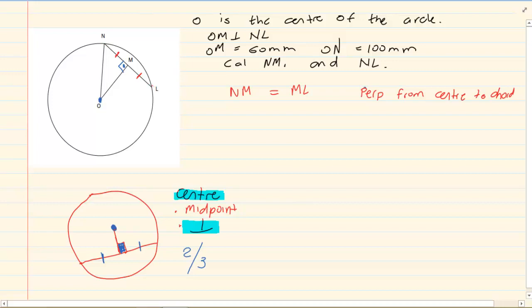Now what else do we have? They told us that OM is 60 and they told us that ON is 100. They want us to calculate NM and then they want us to calculate NL. Now this question is usually known for its Pythagoras. If you look, we have a lovely Pythagoras here: a 90 degree triangle.